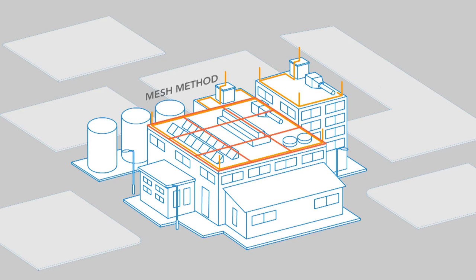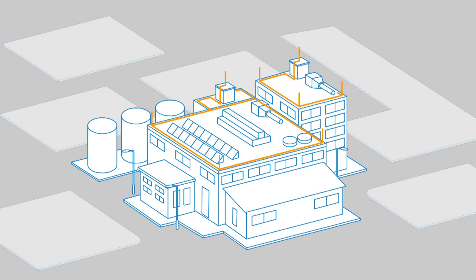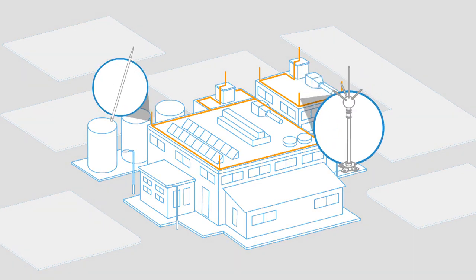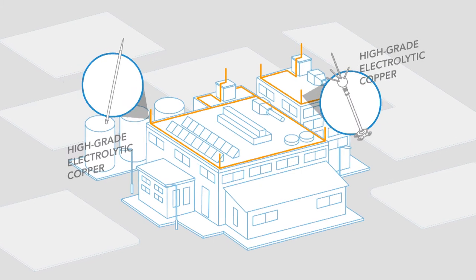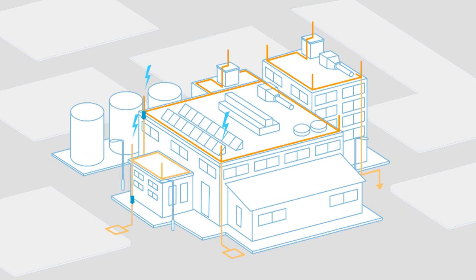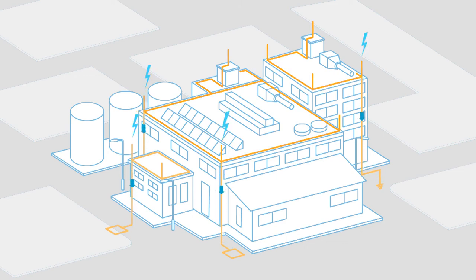The mesh method is best used for flat surfaces where the air termination conductors are to be placed at the roof edges and where no other metallic structure will be above the air termination system. Axis air termination rods made from high-grade electrolytic copper provide the highest conductivity, allowing the flow of lightning strikes without any damage to the structure or equipment.